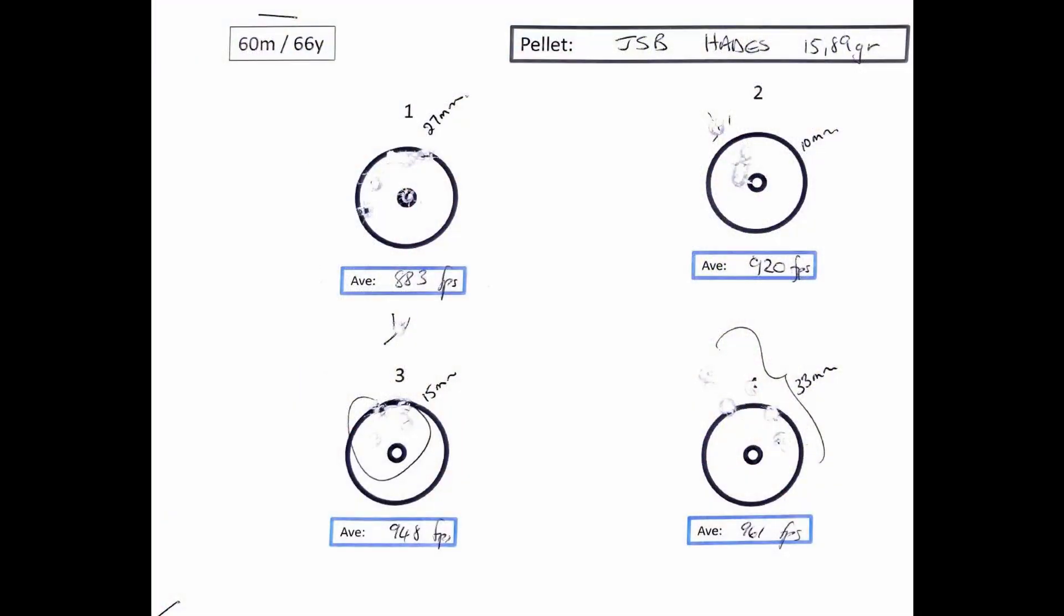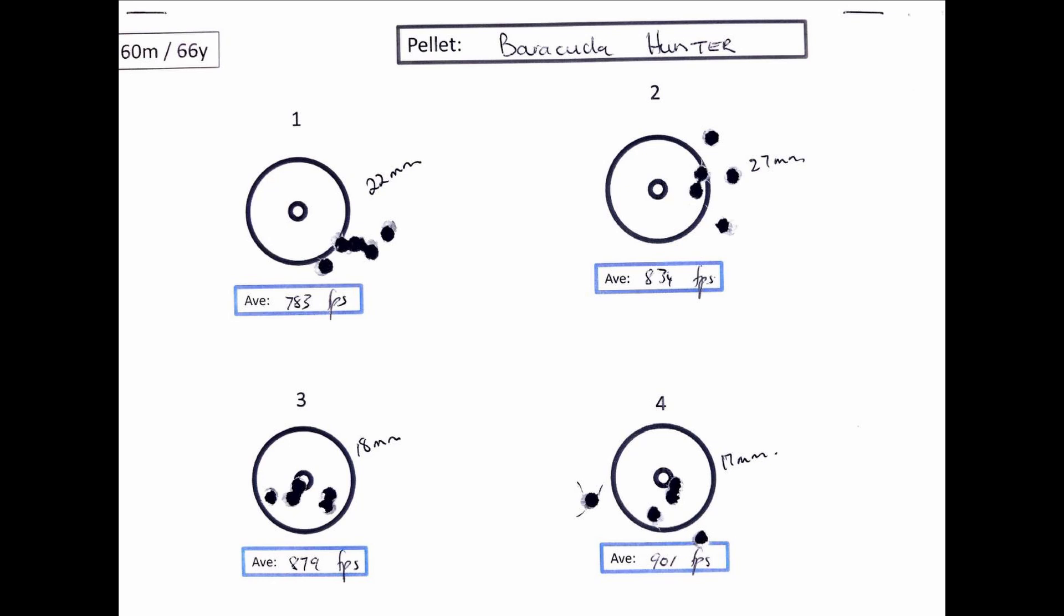Lackey man, lackey! Now that was a fun day, wouldn't you agree? The Hades as the last babies in the batch, and 948 feet per second, that is some decent, decent grouping, I think so. In any case, so to sum this all up, five of the six pellets grouped exceptionally well at 60 meters.